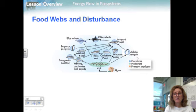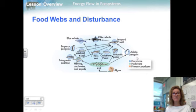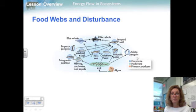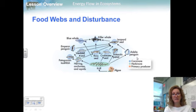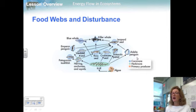When disturbances of food webs happen, their effect can be dramatic. For example, all the animals in this food web depend directly or indirectly on shrimp-like animals called krill. Krill are one example of small swimming animals called zooplankton. In recent years, krill populations have dropped substantially. Given the structure of this food web, a drop in the krill population can cause drops in the populations of all the other members of the food web shown.